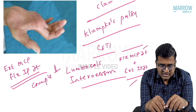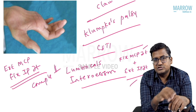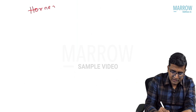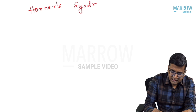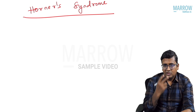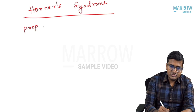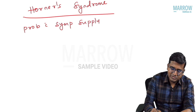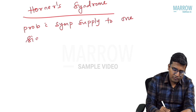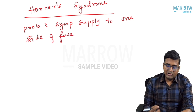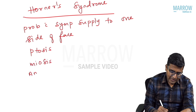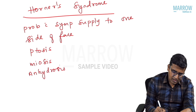In Klumpke's palsy you see complete claw hand plus Horner syndrome due to involvement of sympathetic fibers at T1. Horner syndrome is due to a problem with the sympathetic supply to one side of the face. The features are ptosis, miosis, anhidrosis, and enophthalmos.